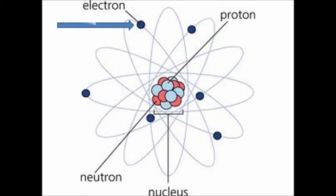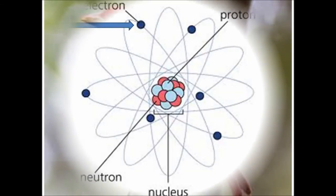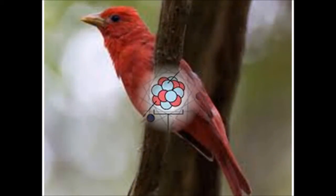The mass of all the electrons in a 70 kg man is equal to the weight of the summer tanager, weighing an average of 30 grams.